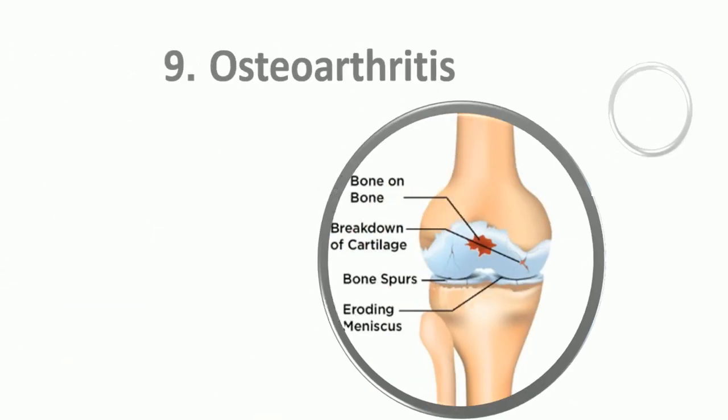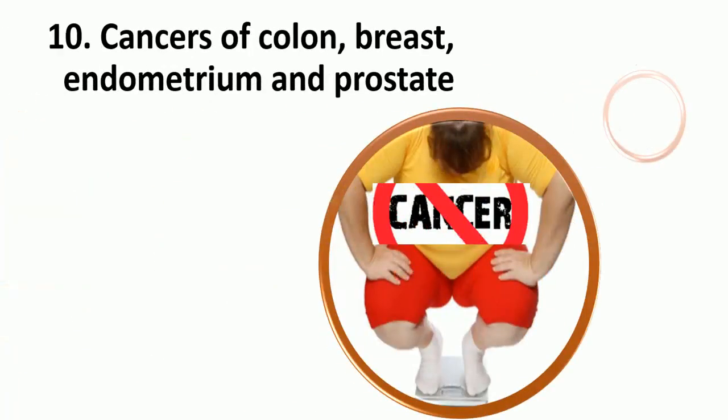9. Osteoarthritis. These individuals are more prone to develop degenerative joint disease due to wear and tear following trauma to joints as a result of large body weight. 10. Cancer. A diet rich in fats, particularly derived from animal fats and meats, is associated with higher incidence of cancers of the colon, breast, endometrium, and prostate.